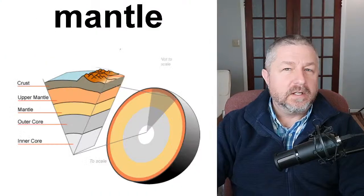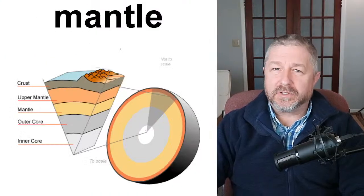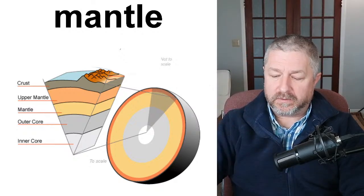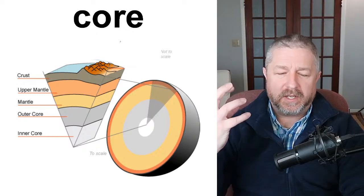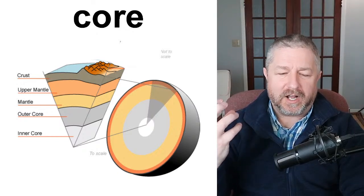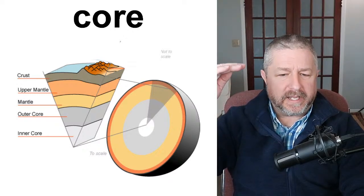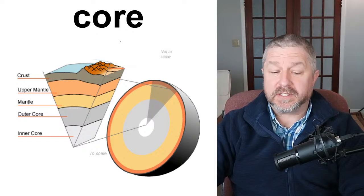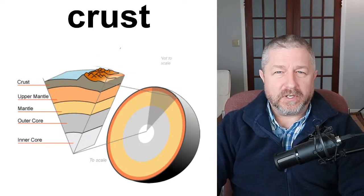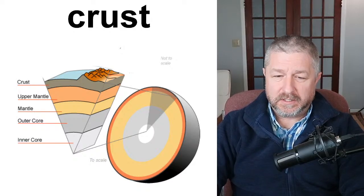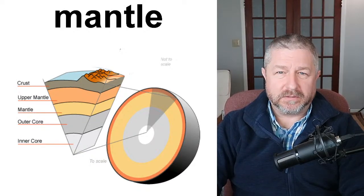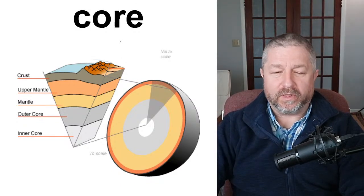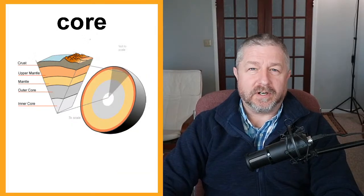Underneath the crust you have what's called the mantle. The mantle is the part of the Earth between the crust and the core. And the core of the Earth is the hot center of the Earth. For the simplicity of this lesson: we have the crust of the Earth, the mantle of the Earth which is below the crust but above the core, and then we have the Earth's core — the hot center of our planet.